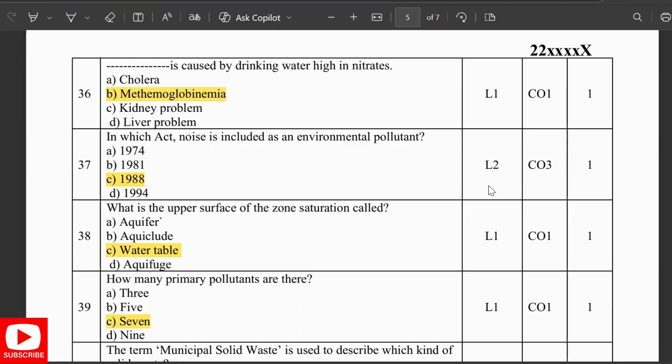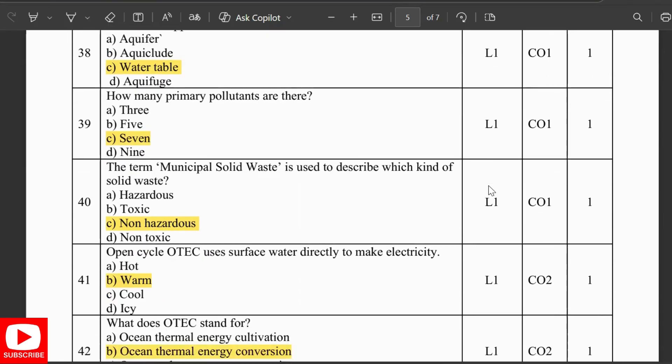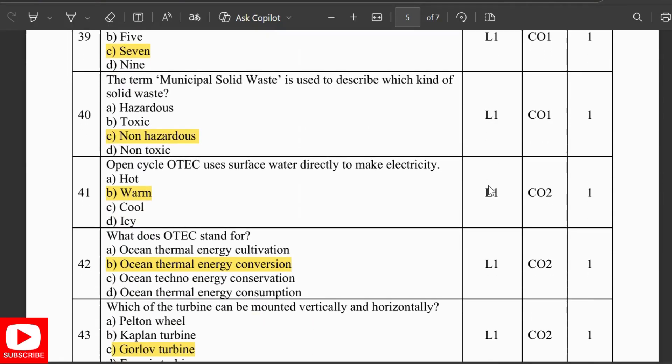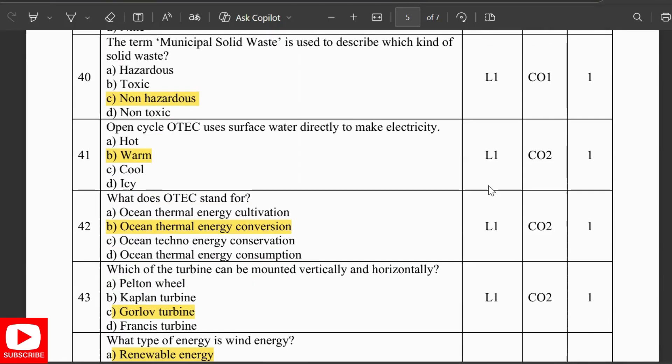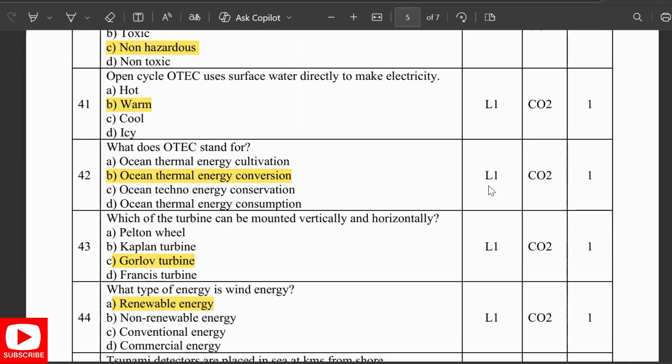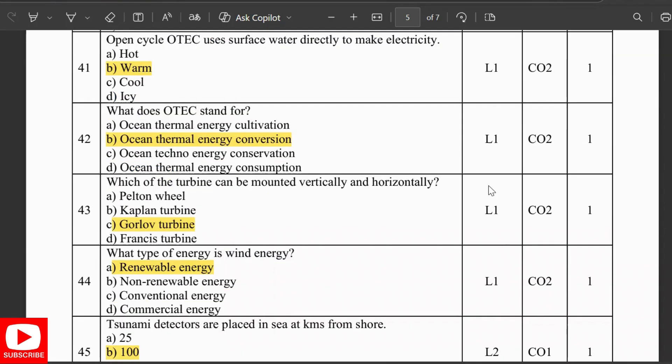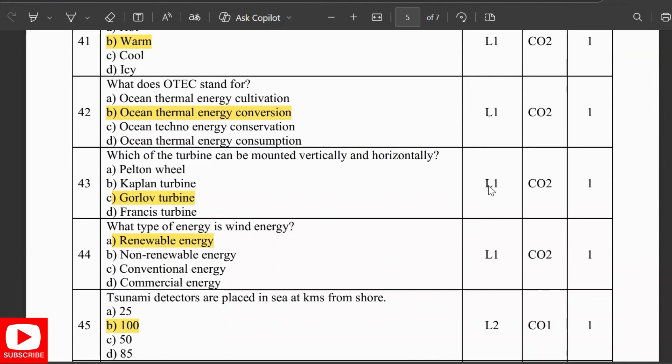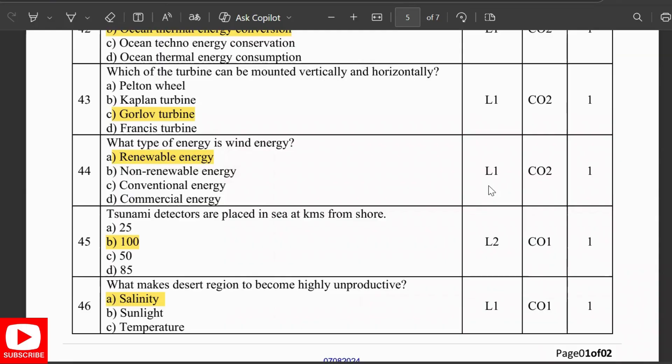What is the upper surface of the zone of saturation called? It is water table. How many primary pollutants are there? Seven. The term municipal solid waste is used to describe which kind of solid waste? Non-hazardous. Open cycle OTEC uses the surface water directly to make electricity. What does OTEC stand for? Ocean Thermal Energy Conversion. Which turbine can be mounted vertically and horizontally? Gorlov turbine.